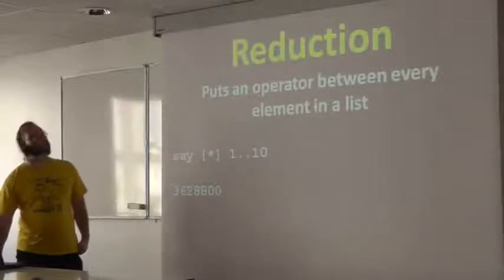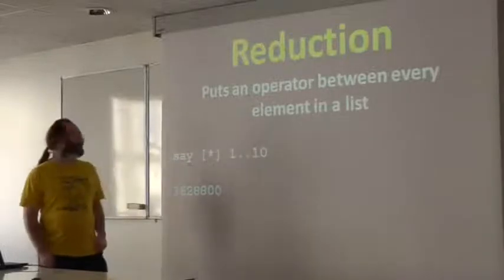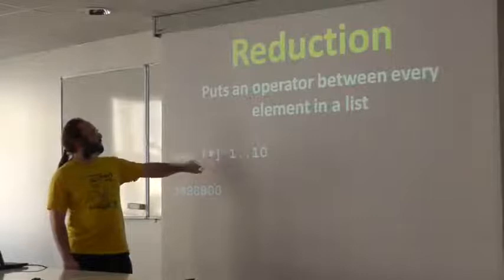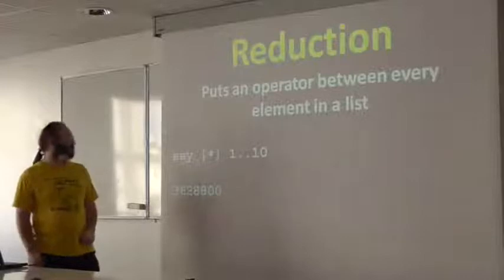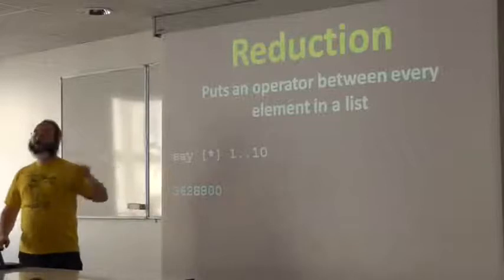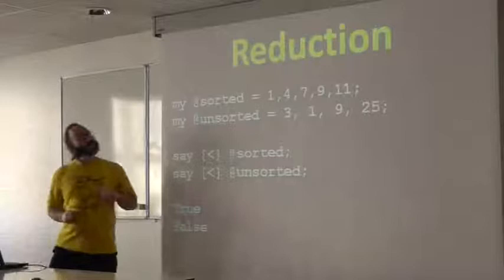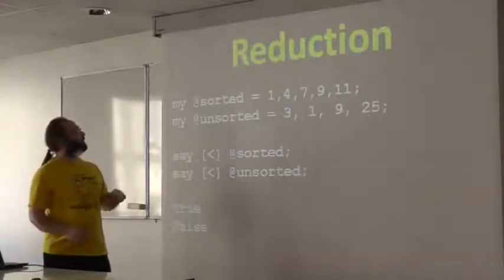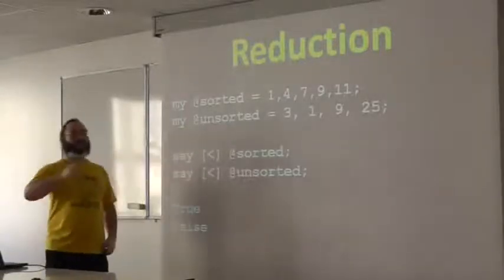This is reduction. It takes the multiplication operator. You can see that in there. And then it puts some wrapper around it that says, actually, do this between every element in the list. That's factorial. It's multiplying 1 by 2 by 3 by 4 all the way up to 10. Or we can take the less than operator. I want to check if this list is sorted. So I just make sure that all of the numbers in the list are less than the one that comes next.